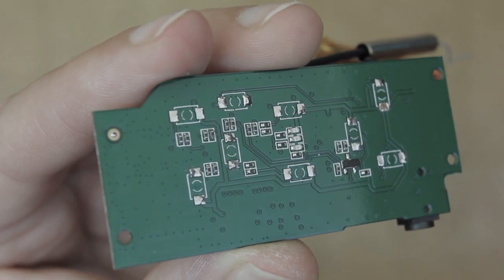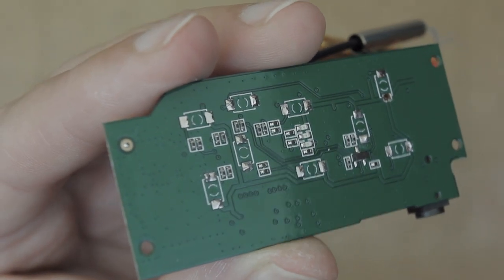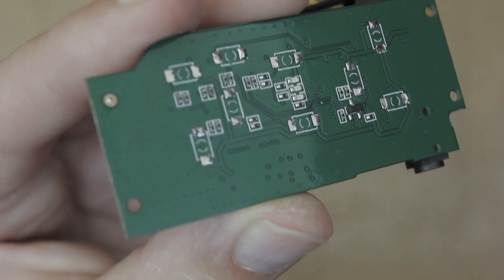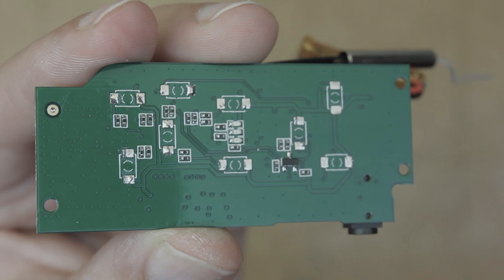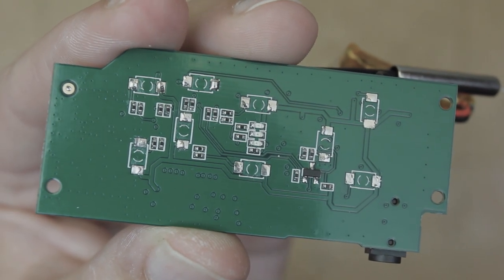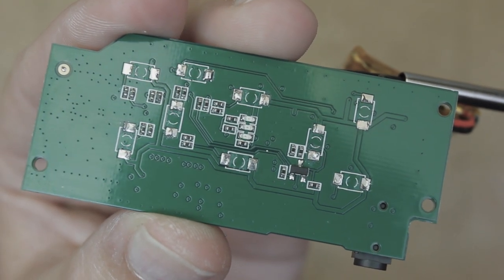I used some solder wick to get the old solder off and then added some fresh solder to each one. You might be thinking that this is a bit of a waste of time. You could be right. However, I wanted to have the best possible solder joint I could achieve so I didn't end up with cold solders or connections that break off after a while.